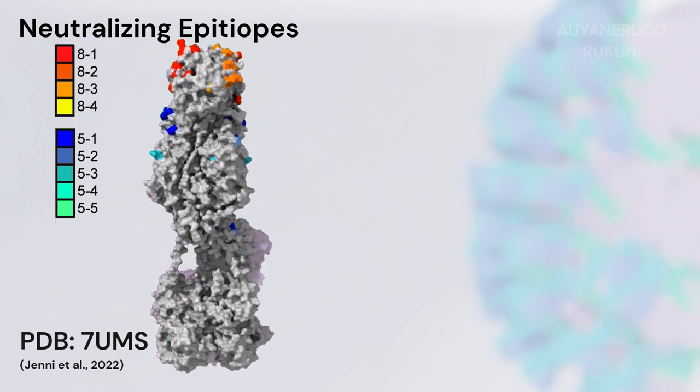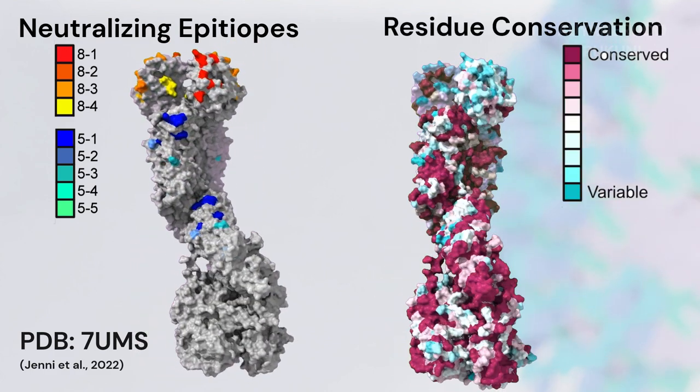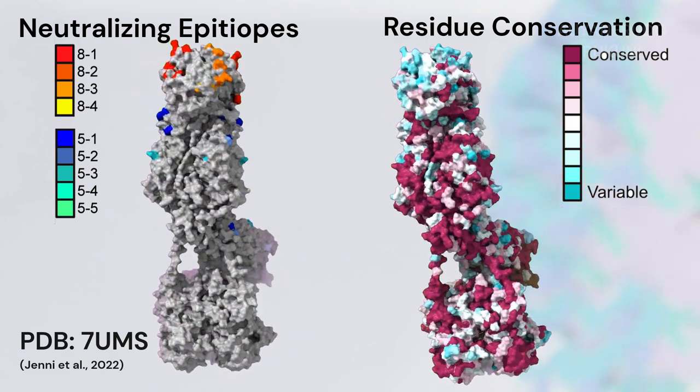VP5 and VP8 collectively have nine structurally defined neutralizing epitopes, however the much greater conservation in VP5 suggests stronger functional constraints, making it a promising antigen for rotavirus vaccines.